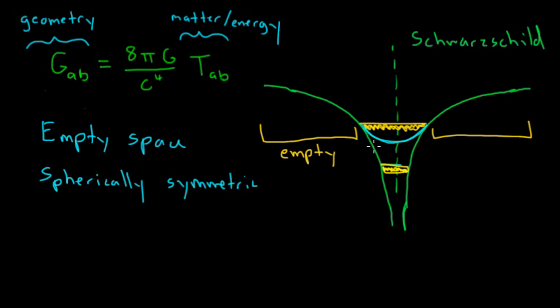So our solar system is very well described by this geometry. And it also describes outside of a black hole, which is a fairly interesting solution. And we'll talk a lot more about black holes, I'm probably going to do a whole other video series on those. So that's one solution to Einstein's equations.